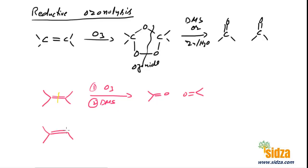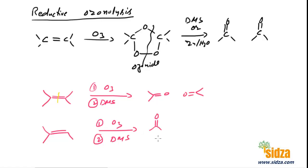If you have a different alkene and you do reductive ozonolysis — first react with ozone and then use DMS or zinc in water — one of the molecules will be a ketone and another one will be an aldehyde, because over here we have a hydrogen. So you can get either aldehydes or ketones, or you can get both aldehydes and ketones depending on the substitution.